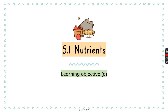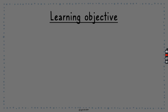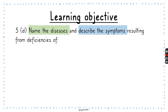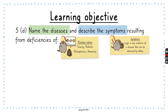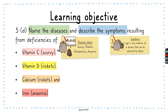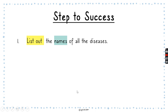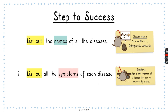Now we're going to look into 5.1 nutrients, learning objective D — why we need to have the correct amount of everything. In this learning objective, we learn about diseases and describe the symptoms of those diseases resulting from deficiencies. Deficiencies mean you don't have enough of those things. The disease names we're going to learn are scurvy, rickets, osteoporosis, and anemia. Symptoms means the signs for those diseases — what kind of evidence can we see?